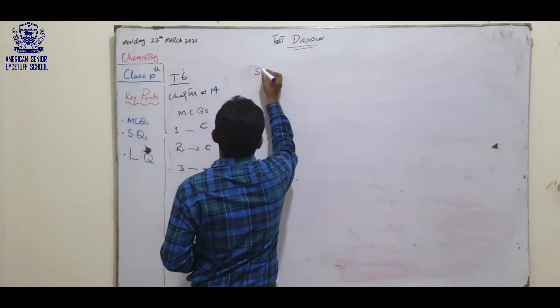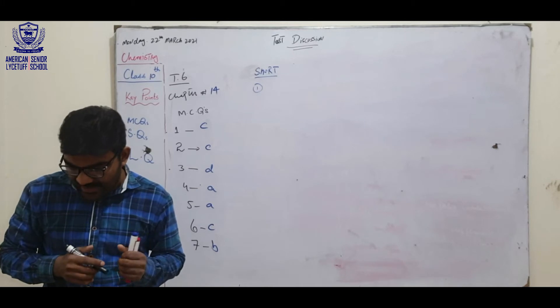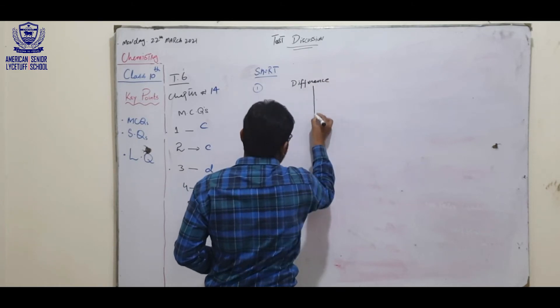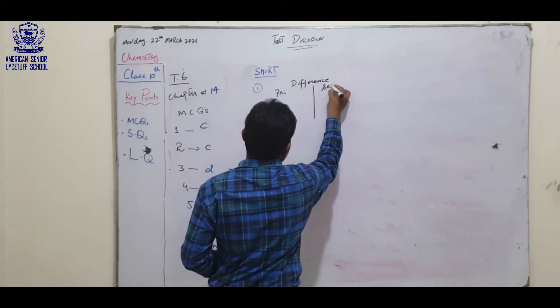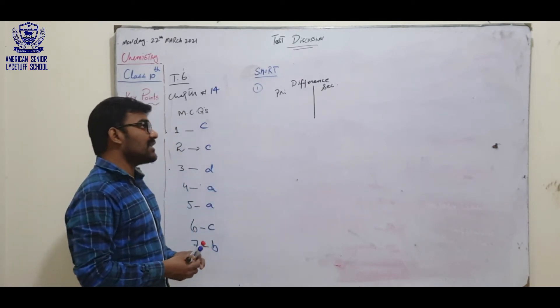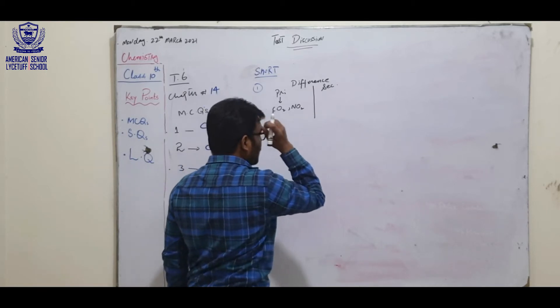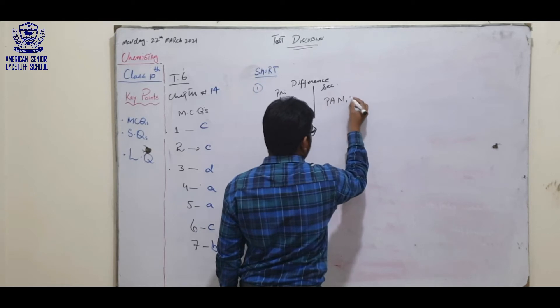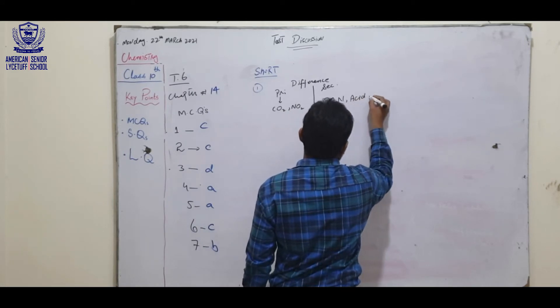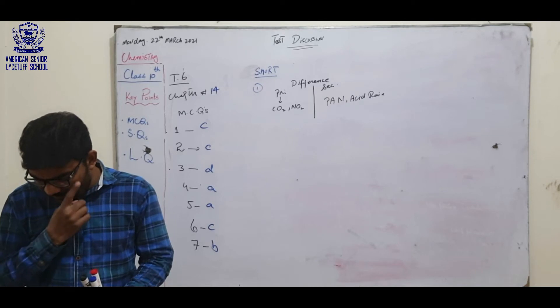Short questions. One side you have primary pollutants, one side you have secondary pollutants. Primary pollutants are those which are exhausted into air by burning, like carbon dioxide, nitrogen oxide, and sulfur oxide. Secondary pollutants are formed in atmosphere like ozone, sulfuric acid, or acid rain. These are different examples of primary and secondary pollutants.